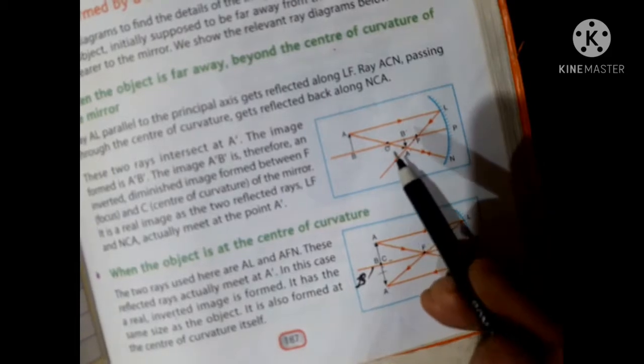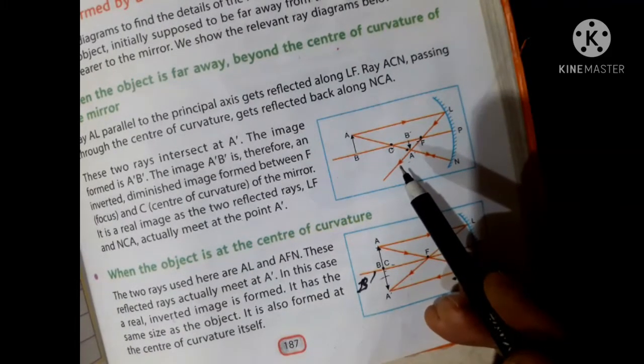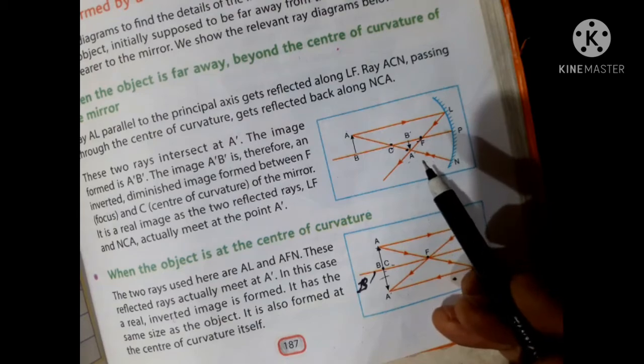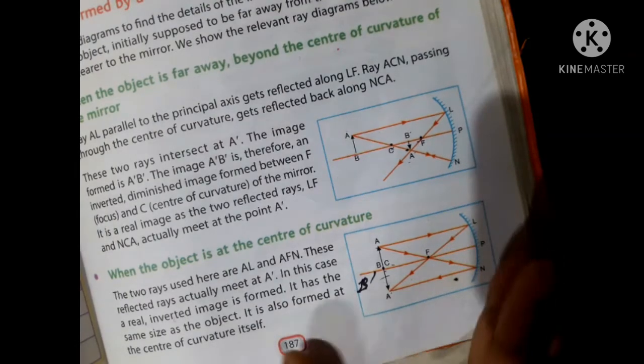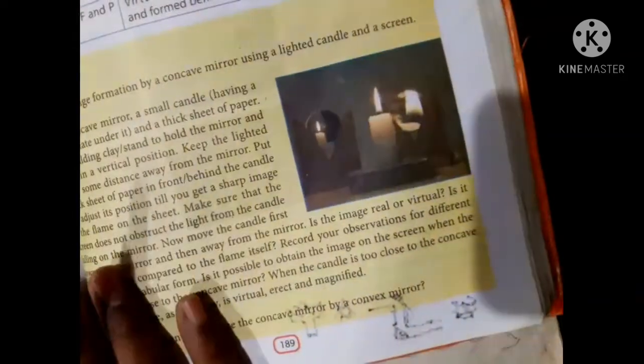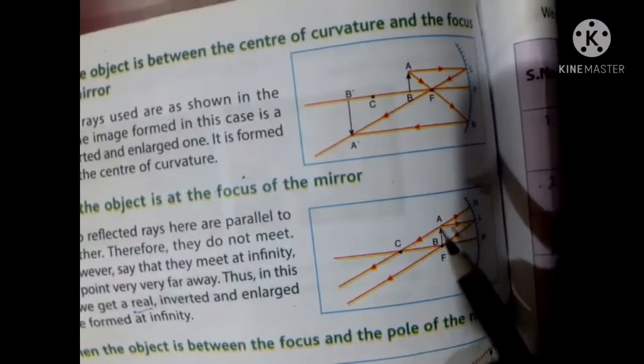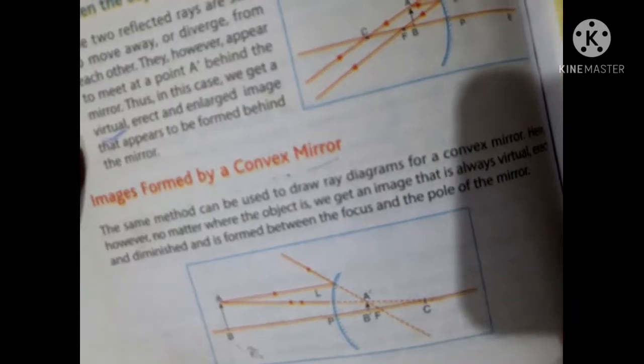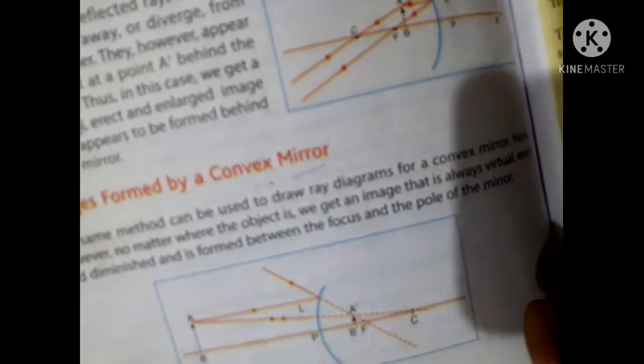This thing is very important in case of concave mirror: when the object is far away, when the object is at the center, where will the image form. This is very important. This is also in Class 10, so if you revise these things you will be able to draw.